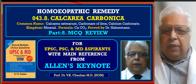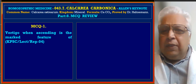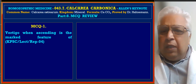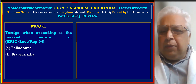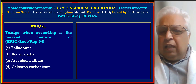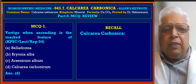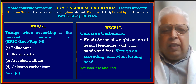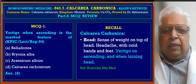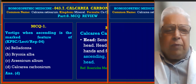MCQ 1: Vertigo when ascending is the mark feature of — A. Belladonna, B. Bryonia Alba, C. Arsenicum Album, D. Calcarea Carbonica. The answer is D. Reference comes from the head section: vertigo on ascending and when turning. Reference is Boericke's Materia Medica.